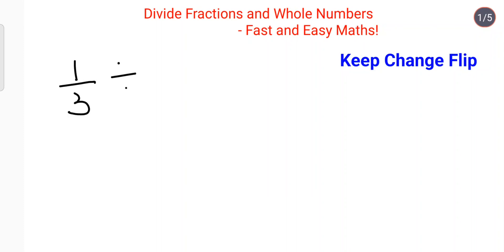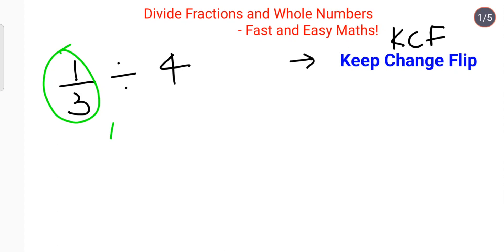Let's say we have 1 upon 3 and we have to divide it by a whole number. In this case, we are going to follow a method called KCF. K means you keep the first fraction as it is, so this will be left as 1 upon 3.